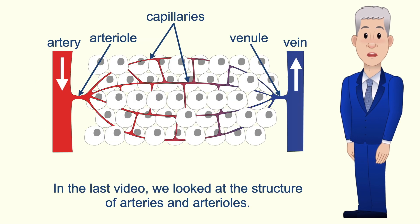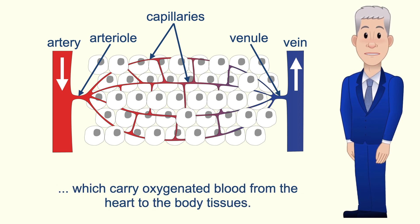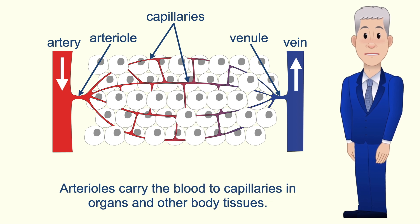In the last video we looked at the structure of arteries and arterioles. Remember that arteries are thick walled blood vessels which carry oxygenated blood from the heart to the body tissues. Arteries branch into a large number of smaller blood vessels called arterioles, which carry the blood to capillaries in organs and other body tissues.